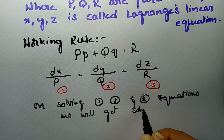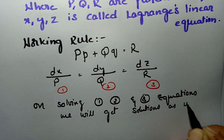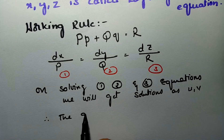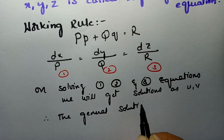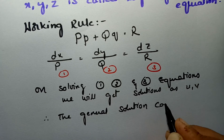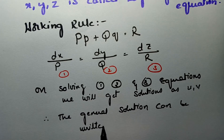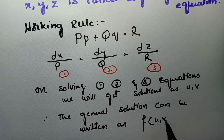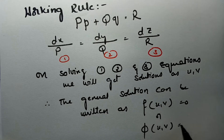On solving equations 1, 2, and 3, we get two solutions u and v. The general solution can then be written as f(u, v) = 0, or equivalently φ(u, v) = 0.